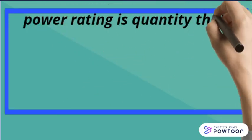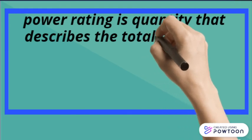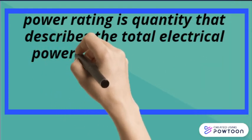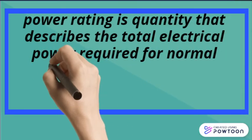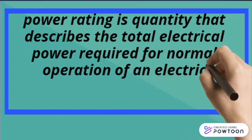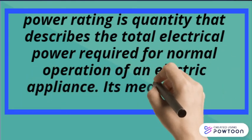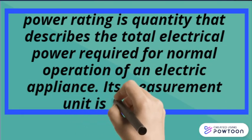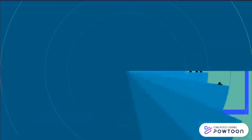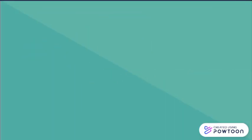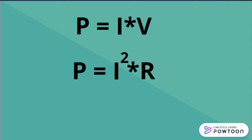Power rating is a quantity that describes the total electrical power required for normal operation of an electric appliance. Its measurement unit is watt. The equation is the power rating equals current times voltage.